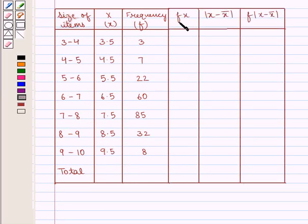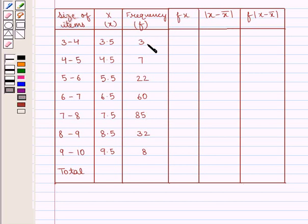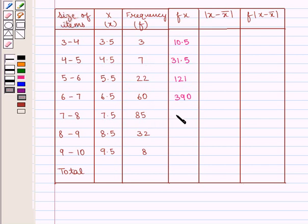Now we find the f×x series: 3.5×3 = 10.5, 4.5×7 = 31.5, 5.5×22 = 121, 6.5×60 = 390, 7.5×85 = 637.5, 8.5×32 = 272, and 9.5×8 = 76.